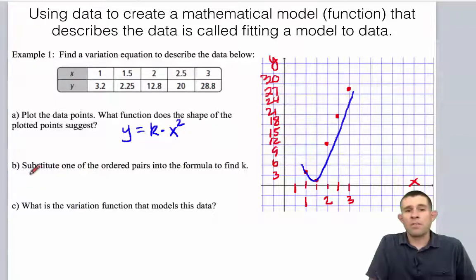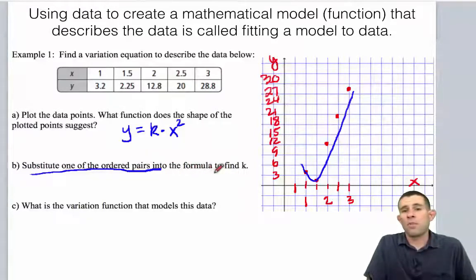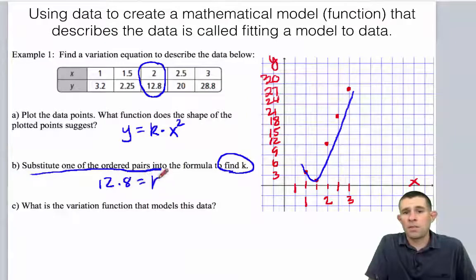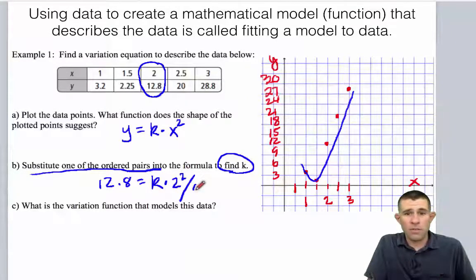Now what we're going to do is we're going to substitute one of our ordered pairs, one of our data sets, into our formula and see if we can find the value of k. So let's choose the data set 2 as x and 12.8 as y. So we'll write 12.8 is equal to k times 2 squared. 2 squared is 4. So if I divide both sides here by 4, I'll end up with a value of k to be equal to 3.2.